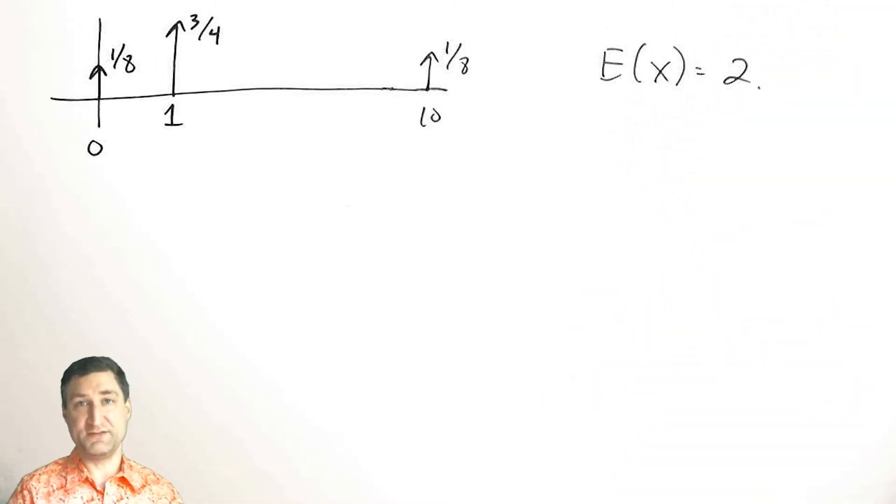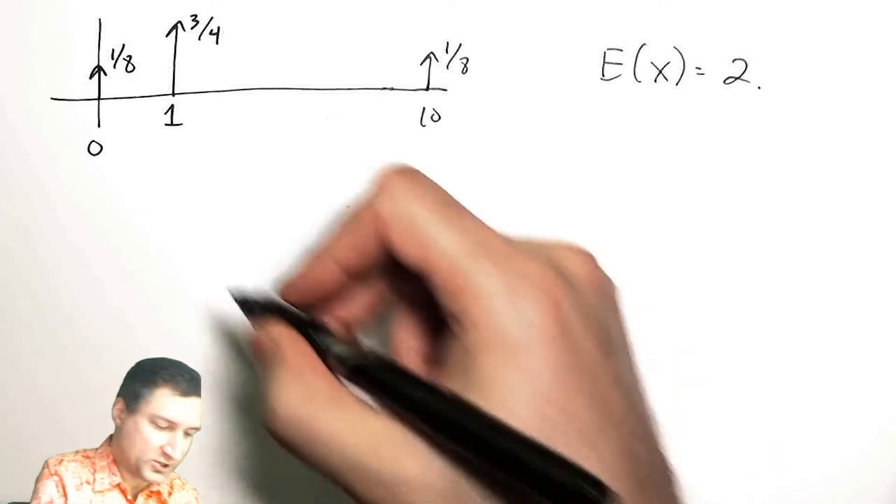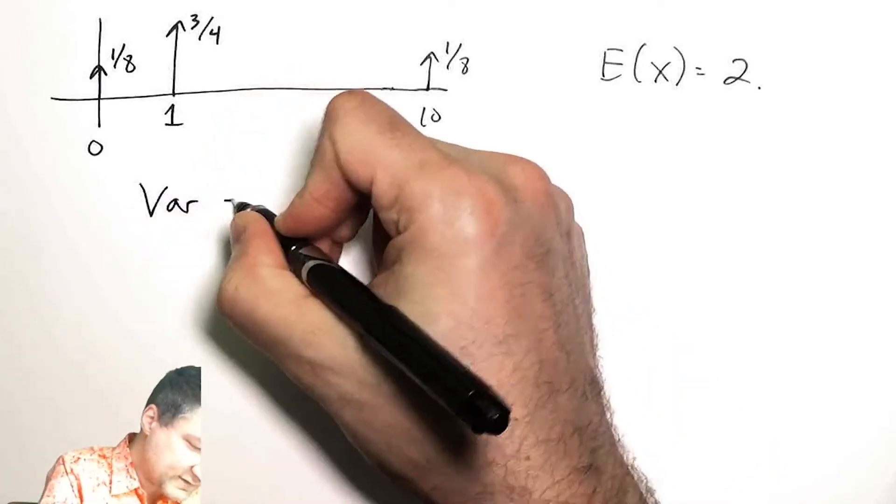So what is the variance of this random variable? There are a couple ways I could go about it. I could go straight out from the definition, which says the expected value of (X minus the mean) squared.